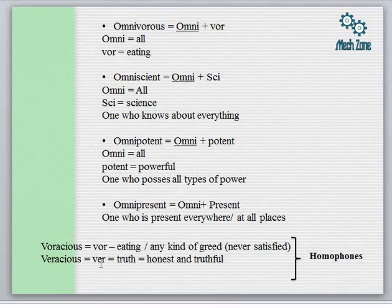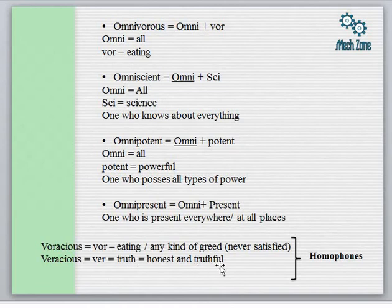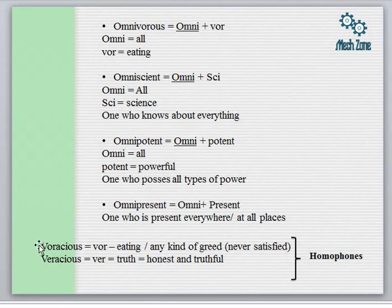Next we come to the word 'voracious.' 'Vor' means eating and it also refers to any kind of greed which can never be satisfied. Next is 'veracious' — veracious means truth or a person who is honest and truthful. Voracious and veracious are actually homophones, meaning they have similar sounds. These two words are very commonly used in vocabulary, and we must remember the meaning of both and the sense in which they are used.